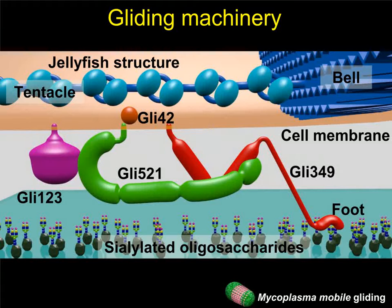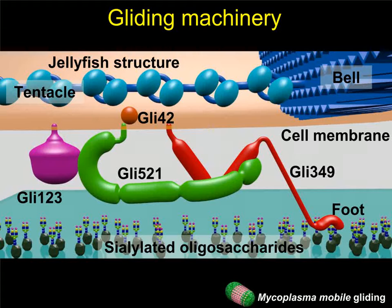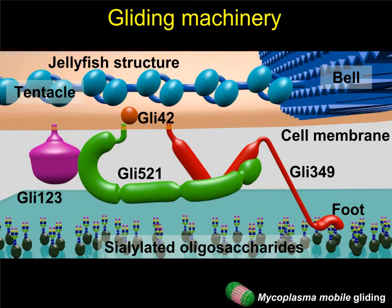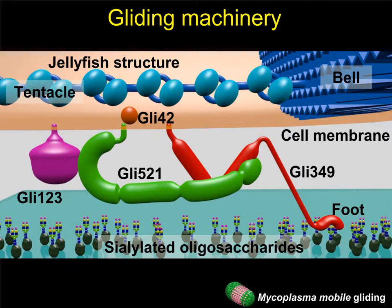The gliding machinery can be classified into internal and surface structures, shown on the upper and lower sides of the membrane respectively. The surface structure is composed of three unique, large proteins. The legs, composed of Gli349 proteins, catch, pull, and release the oligosaccharides on the host cell surfaces.